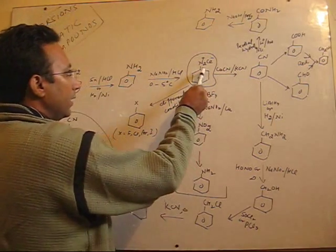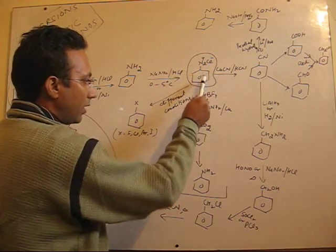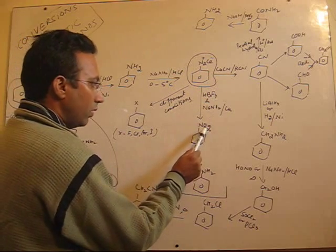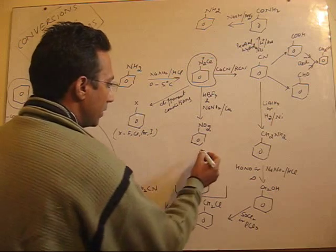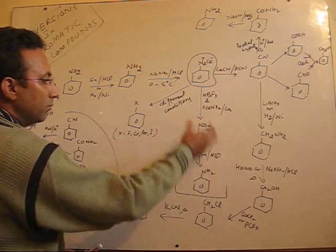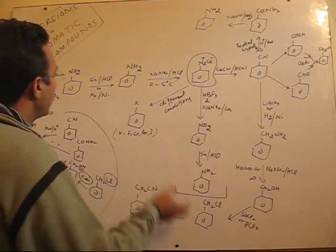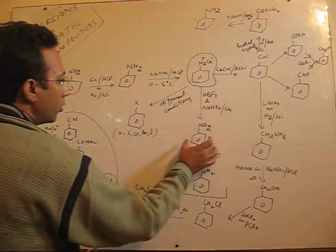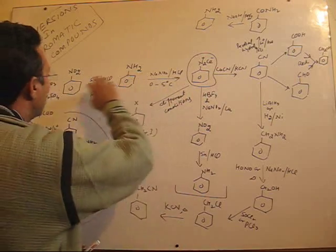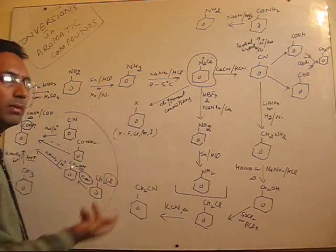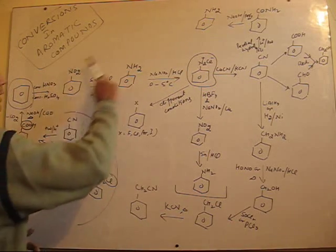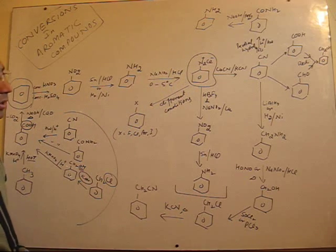Diazonium chloride can be converted into nitrobenzene, which we have already discussed. Once you get nitrobenzene, nitrobenzene can undergo reduction and you will get aniline. You can have a conversion from benzene to chlorobenzene by direct chlorination, but for benzene to fluorobenzene, you must go only through diazonium salts because there is no direct method.